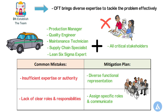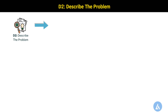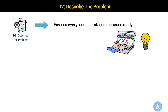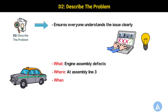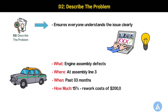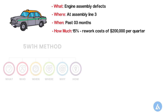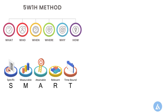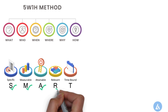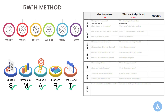Once we define the cross-functional team, we go to step D2 — Describe the Problem. A well-defined problem statement ensures everyone understands the issue clearly, enabling focused root cause analysis and effective solutions. For our example: the issue is engine assembly defects; it occurred at assembly line 3; it started from the past 3 months; the impact is a 15% rejection rate and increasing rework cost by $200 per quarter. We can enhance the problem definition using the SMART technique — Specific, Measurable, Attainable, Relevant, and Time-bound — as well as the Is-Is-Not tool.